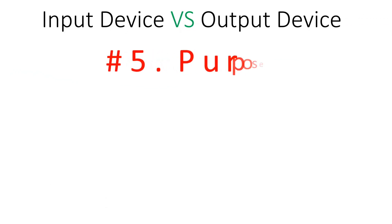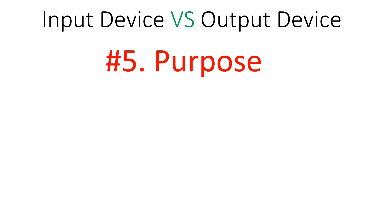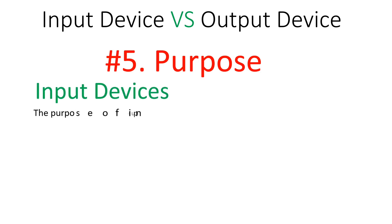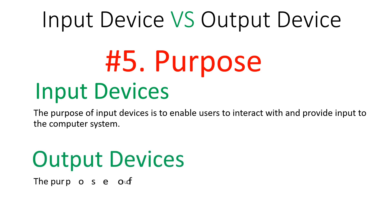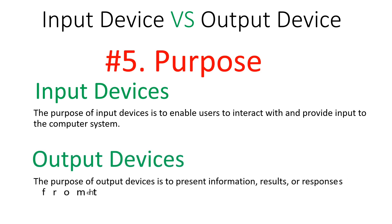The purpose of input devices is to enable users to interact with and provide input to the computer system. The purpose of output devices is to present information, results, or responses from the computer to the user — displaying the result of processing.